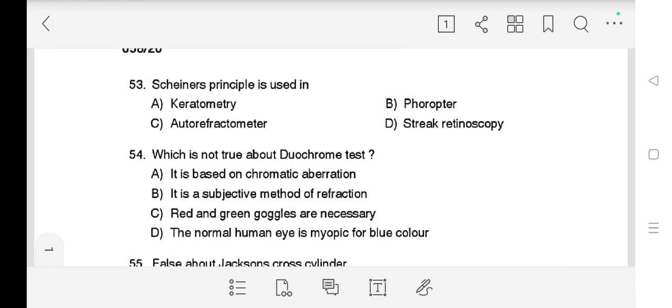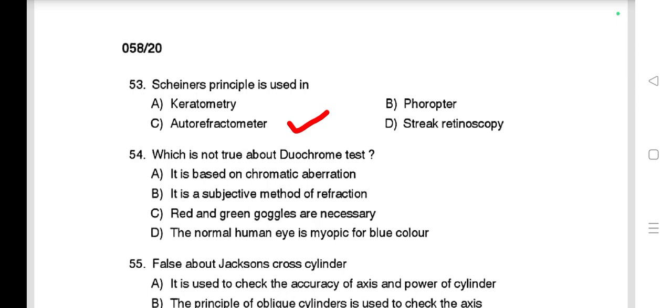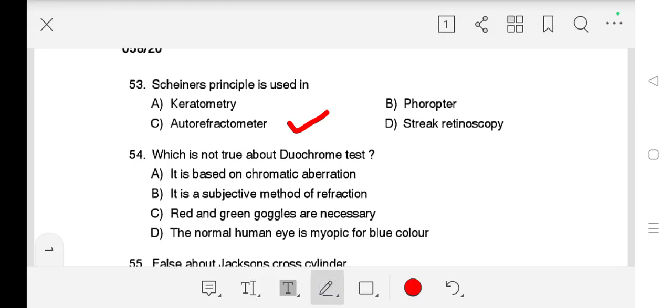Hello friends, let's continue with our question paper, Kerala PSC Optometrist Grade 2 December 2020. Question number 53 is: Scheiner's principle is used in A) Keratometry, B) Phoropter, C) Autorefractometer, D) Streak retinoscopy. Right answer is C) Autorefractometer. Question number 54 is: Which is not true about the Duochrome test? A) It is based on chromatic aberration, B) It is a subjective method of refraction, C) Red and green goggles are necessary, D) The normal human eye is myopic for blue. Correct answer is C) Red and green goggles are necessary.